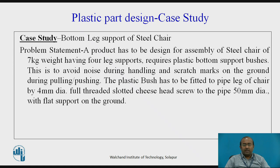Case study: bottom leg support of a steel chair. Problem statement — a product has to be designed for assembly of a steel chair of 7 kg. Having 4-leg support, it requires plastic bottom support bushes. This is to avoid noise during handling and scratching marks on the ground during pulling and pushing. The plastic bush has to be fitted to the pipe leg of the chair by a 4 mm diameter fully threaded slotted cheese head screw, to a pipe of 50 mm diameter, with a flat support on the ground.